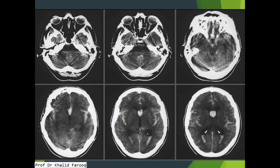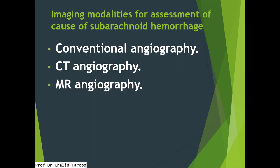Here we have another example where the subarachnoid space contains a hemorrhagic component. This is hemorrhage in the Sylvian fissure, hemorrhage in the interhemispheric fissure, and hemorrhage in the lateral ventricles. The hemorrhagic component is also noted in the basal cisterns and subarachnoid spaces in the posterior fossa, with part of the hemorrhage noted in the fourth ventricle. These hemorrhagic changes are because of a bleeding aneurysm from the circle of Willis.